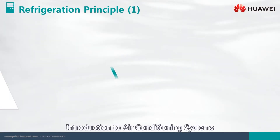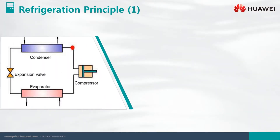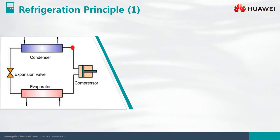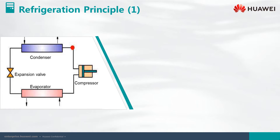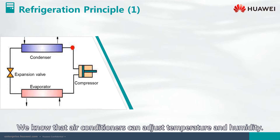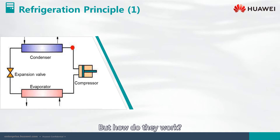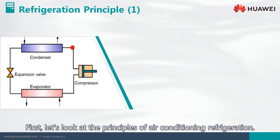Introduction to Air Conditioning Systems. In this section, we introduce the refrigeration principle. We know that air conditioners can adjust temperature and humidity, but how do they work? First, let's look at the principles of air conditioning refrigeration.